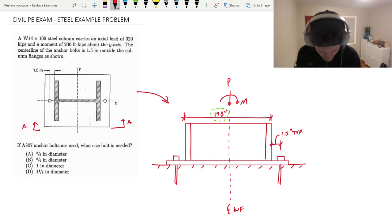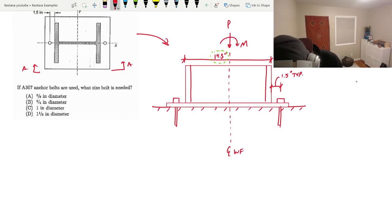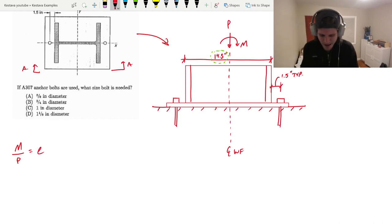First off, we need to start by doing a little something like this. We have a moment and we have an axial load, which means there's going to be an eccentricity hanging around somewhere. How do we represent that? We all remember that M over P equals E. That, when I was studying, came from learning how to design footings. That carries all the way through into any other design we're doing. Same equation, same principles.